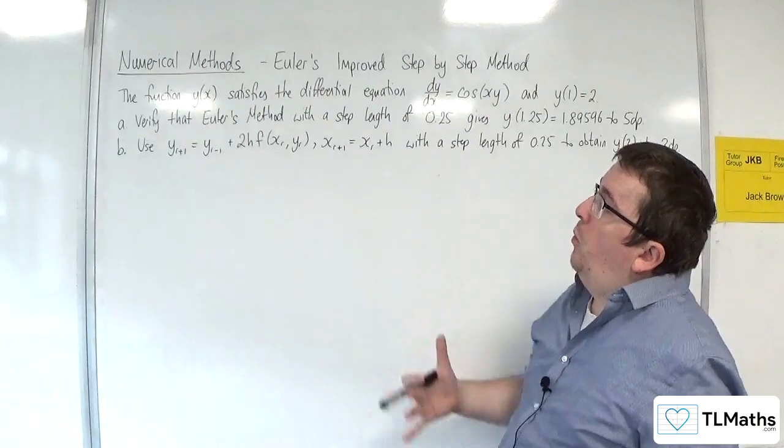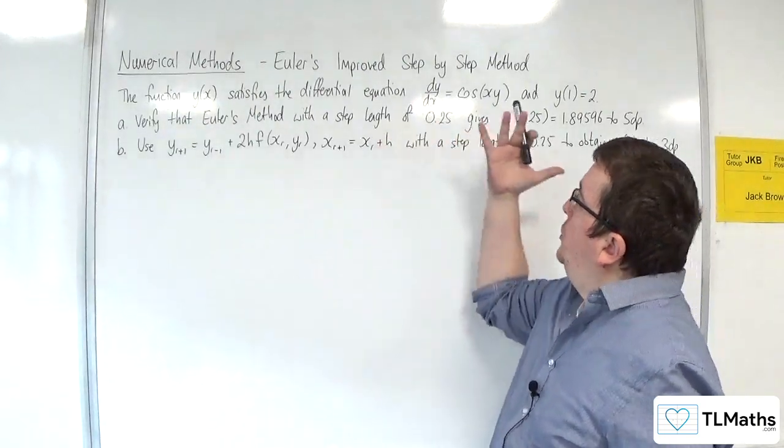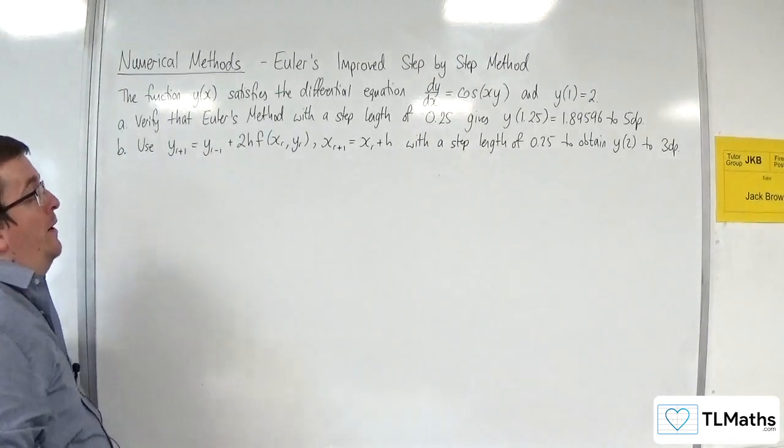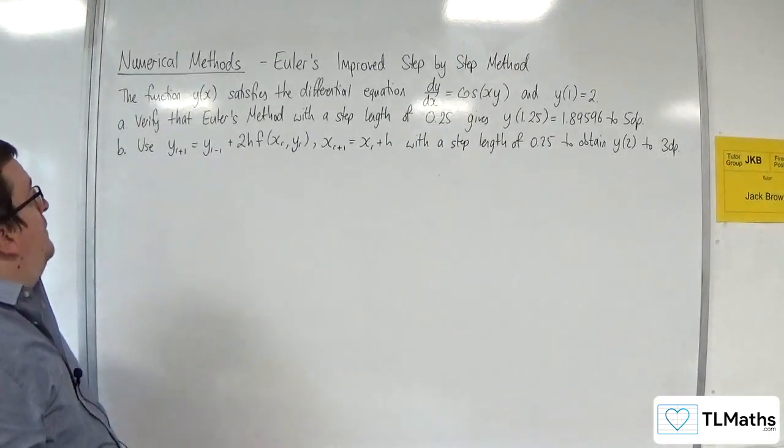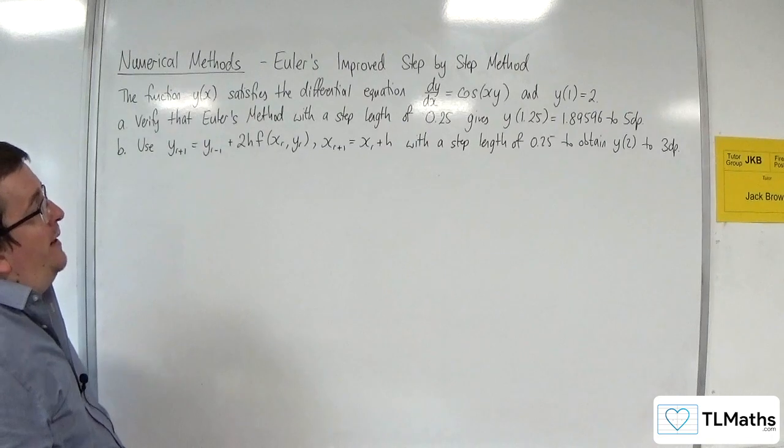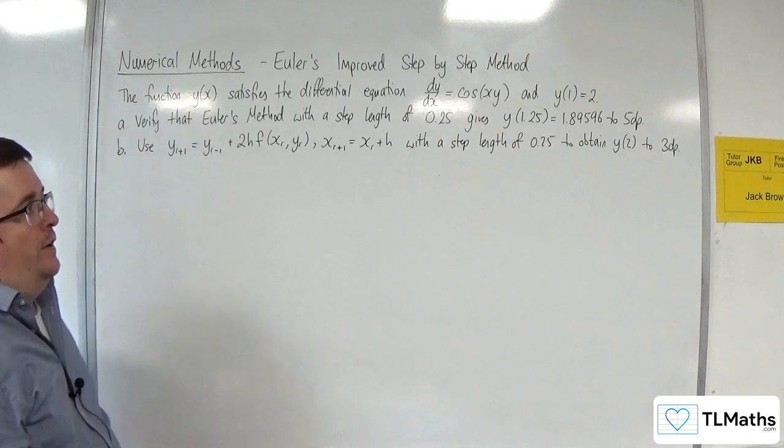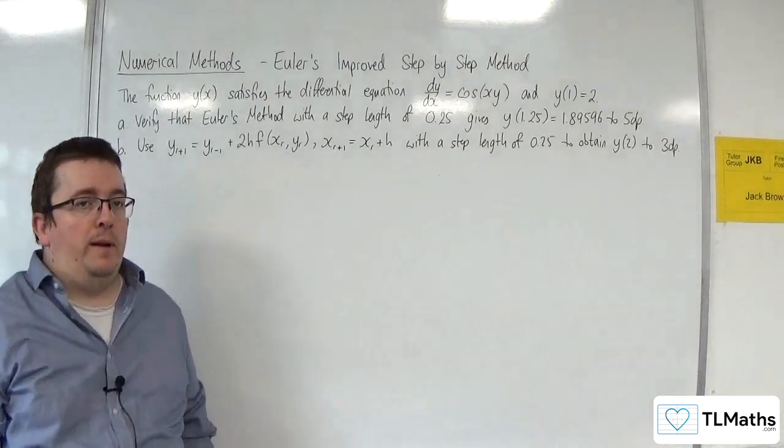In this video, the function y of x satisfies the differential equation dy by dx is equal to cosine of xy, and y of 1 is equal to 2. Part A: verify that Euler's method with a step length of 0.25 gives y of 1.25 as 1.89596 to 5 decimal places.